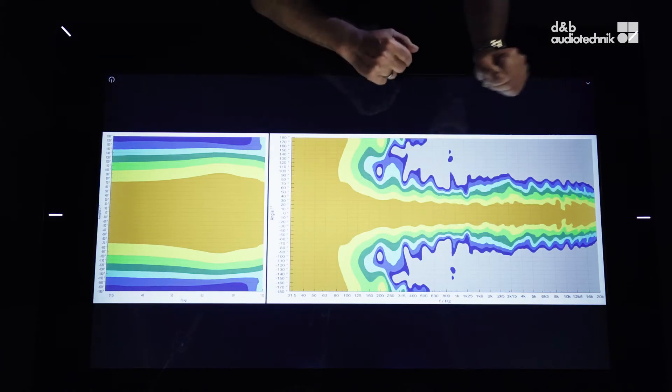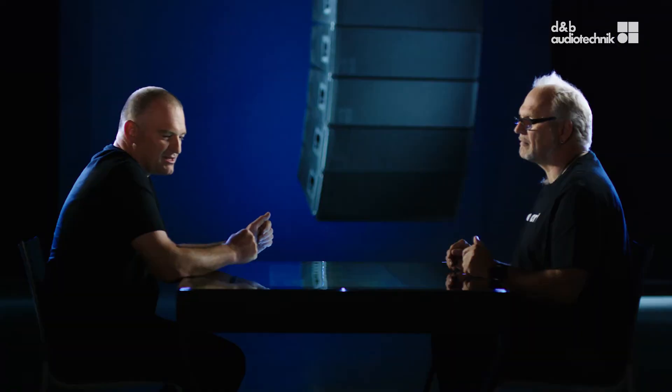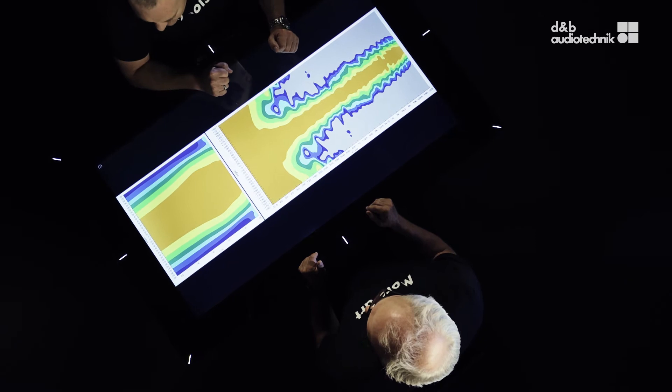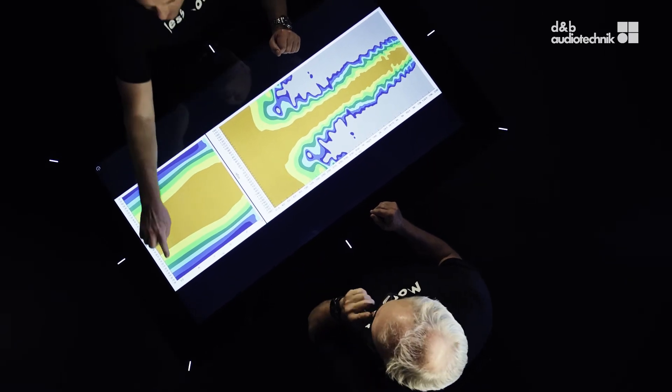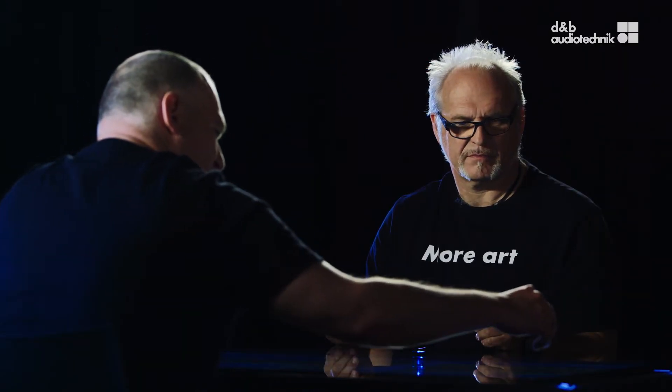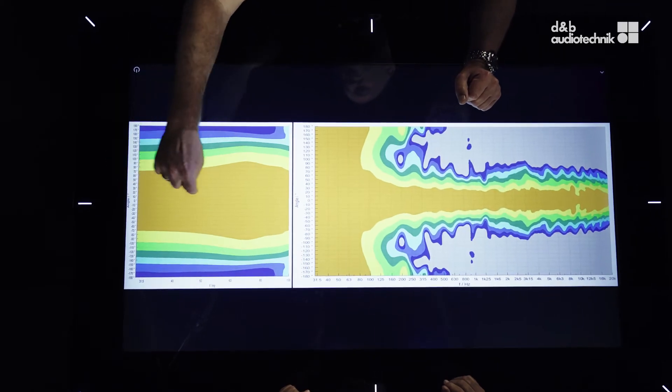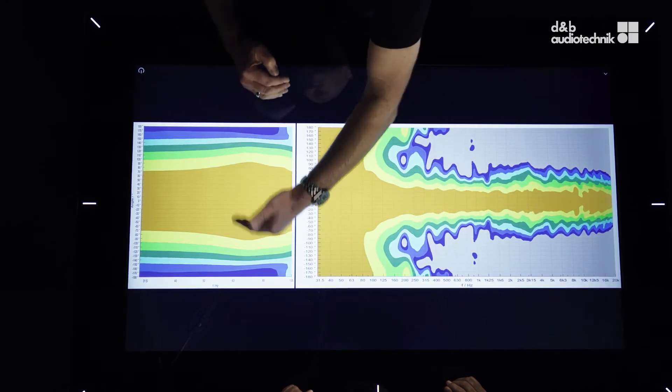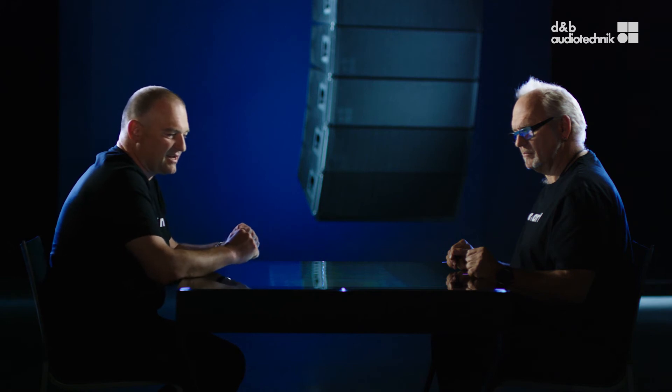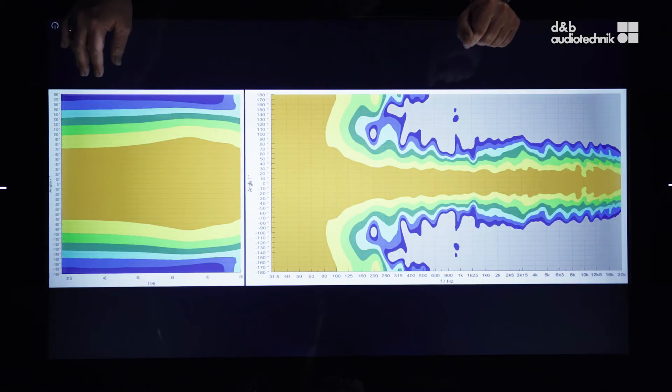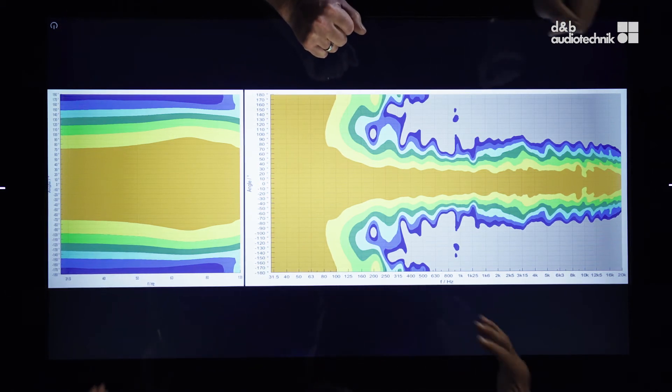If we express this behavior in an isobar form, this here on this side is a subwoofer frequency range from 30 hertz to 100 hertz. On this axis you can see the angles, zero degree axis in the center and downwards and upwards, the angle around the box. Towards the rear the level is decreasing nicely and that's the behavior of a cardioid subwoofer.